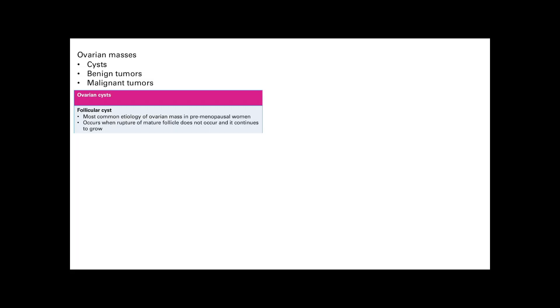Let's start with a cyst. The first thing that can cause an ovarian cyst is a follicular cyst. It's the most common thing. It happens when your mature follicle does not rupture in the ovary, so it stays in the ovary and continues to grow.